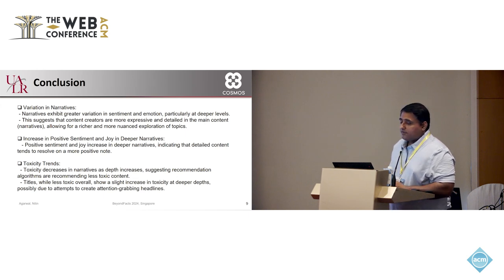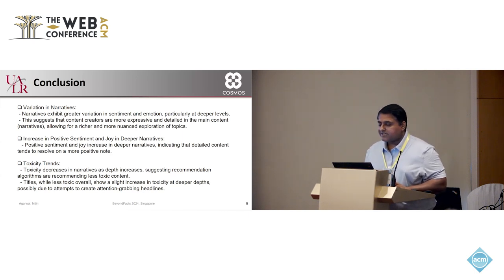So just to summarize what we've seen so far, the first observation that we made was variation in narratives, right? So narratives exhibit greater variation in sentiments and emotions, particularly at deeper levels. This may suggest that the content creators are more expressive and detailed in the main content what they're saying in the videos. Because these are longer duration content, they have more space, more bandwidth for richer and more nuanced exploration of the topic as well as their expressions. Hence, we see a lot of variation in the emotions and sentiment in narratives as compared to titles. Increase in positive sentiment and joy in deeper narratives is seen consistently. Positive sentiment and joy increases in deeper narratives indicating that detailed content tends to resolve or evolve on a more positive note.